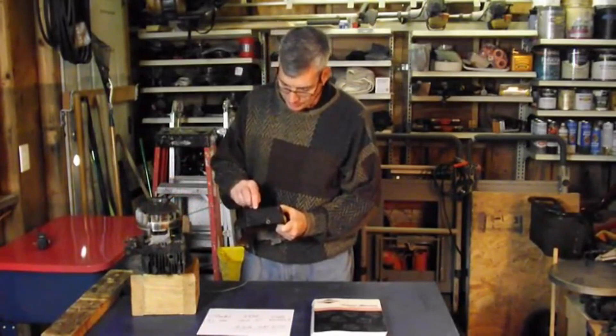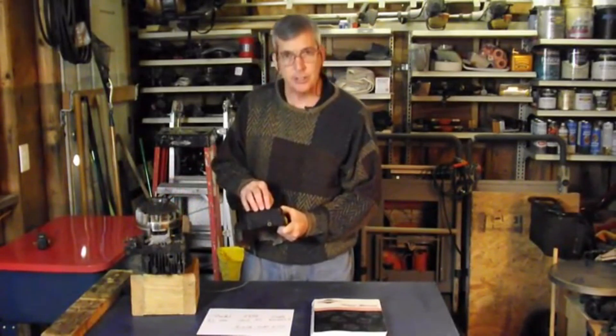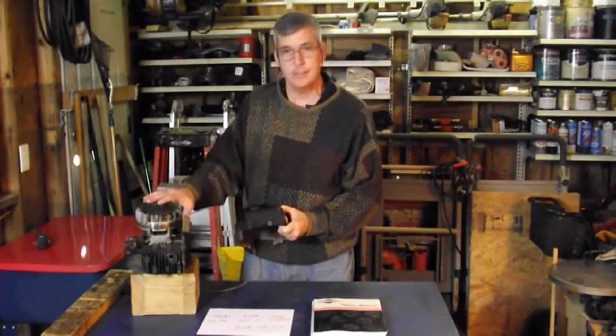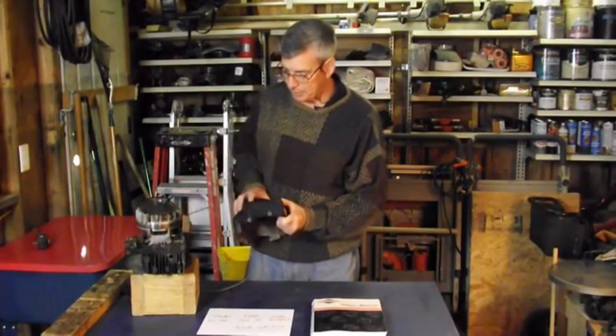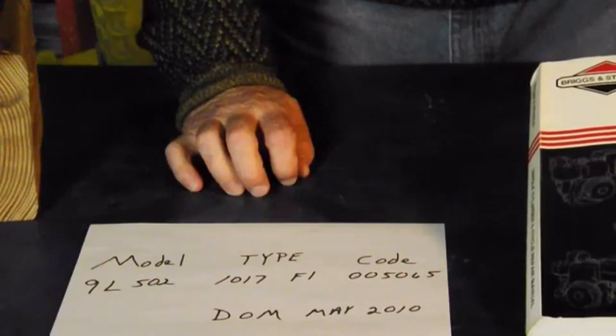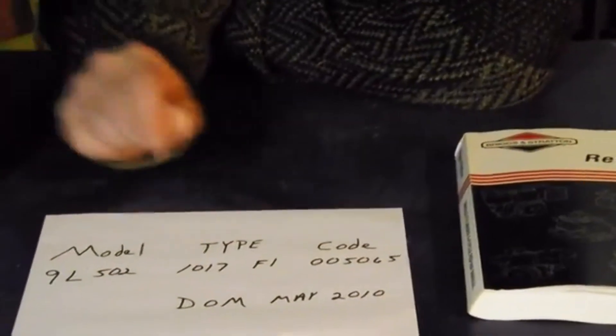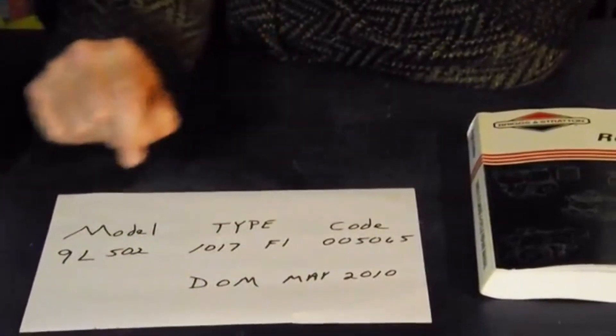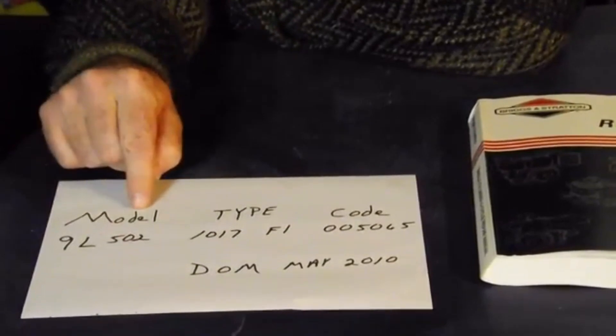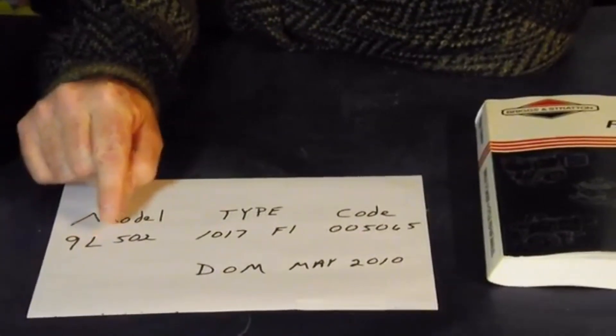And what's also interesting about this is these set of numbers are going to tell us everything about this engine. Let me show you what I mean. Using your repair manual and those numbers that we just got, I've taken the liberty to write it down on a piece of paper. Our model number is 9L502.